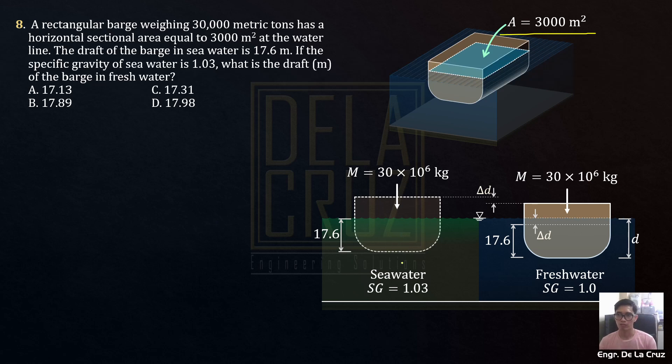Of course, again, for floating bodies, the buoyant force is just equal to the mass. Whether here or here, the buoyant force is just equal to the mass. Equal, their magnitude is equal. What matters here is the change in volume, the volume that's needed. Of course, the lesser the density, the bigger the volume is needed.